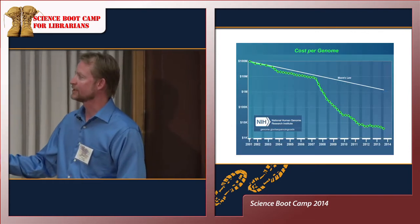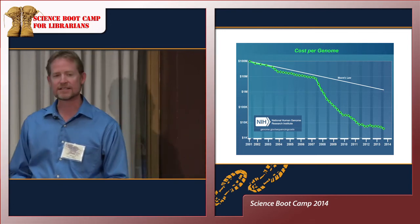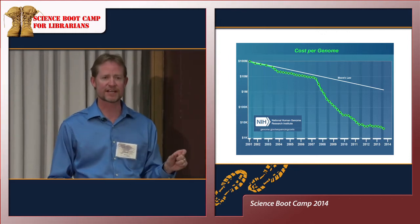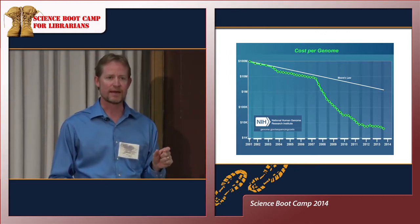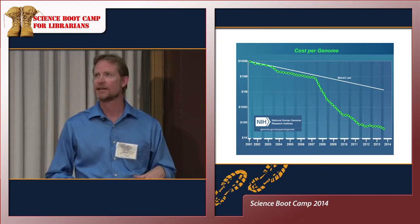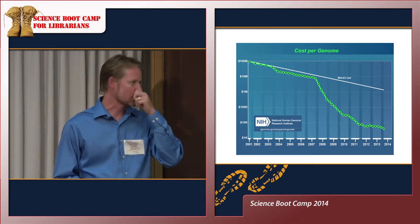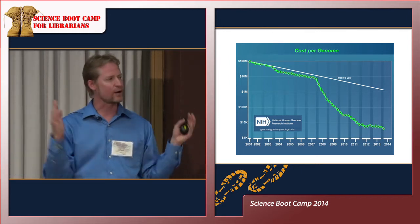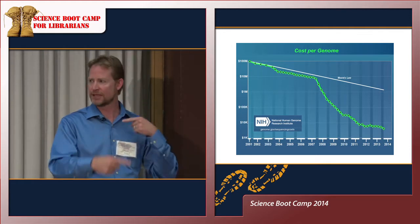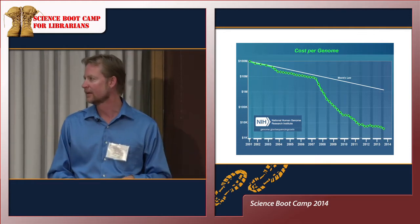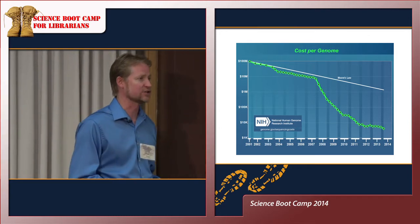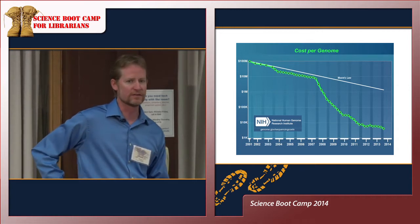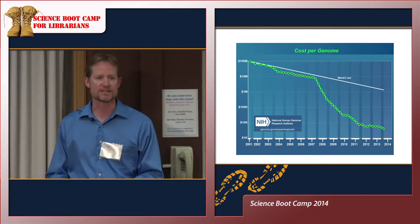What happened around that inflection point is a technological leap. A technology referred to as next-generation sequencing became widespread practice. What this does is basically put sequencing on a chip, allowing you — instead of sequencing one piece of DNA at a time — to do thousands of chains at a time in one reaction. It speeds up the reaction tremendously while reducing costs dramatically. That technology really took over the sequencing world around the middle of the last decade, and that explains the drop.